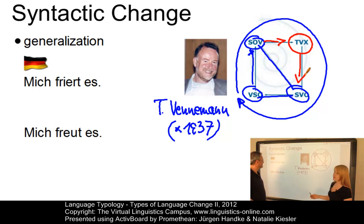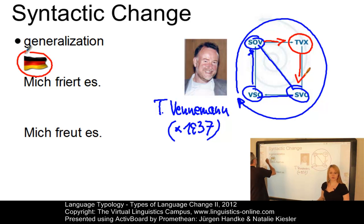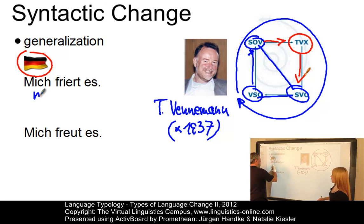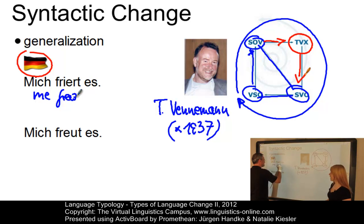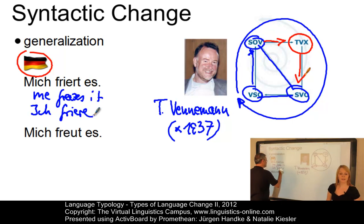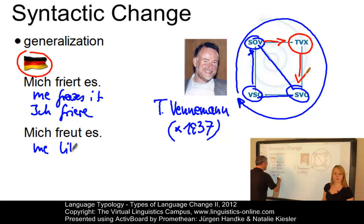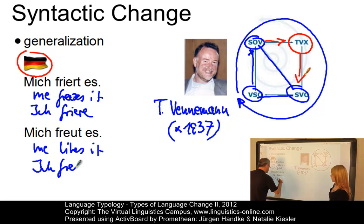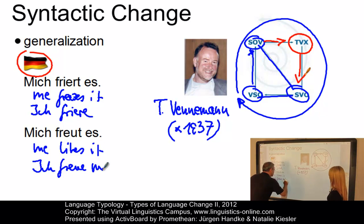Here are some more examples of impersonal constructions that still occur in modern German. The first is 'Mich friert es,' meaning 'me freezes it' in English, which became 'Ich friere,' or 'I freeze' in English. The second example is 'Mich freut es,' meaning 'me likes it' in English, which became 'Ich freue mich,' meaning 'I like it.'